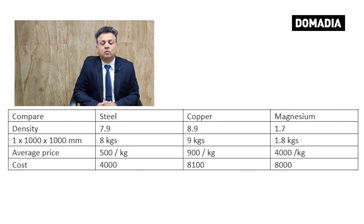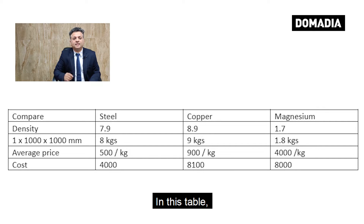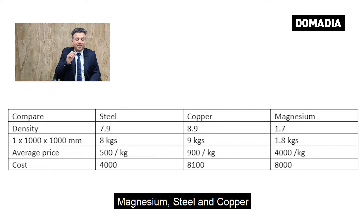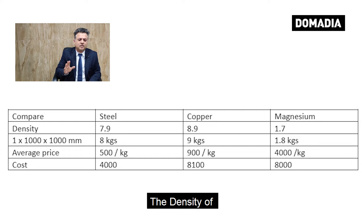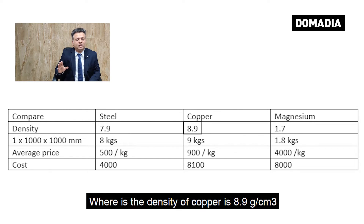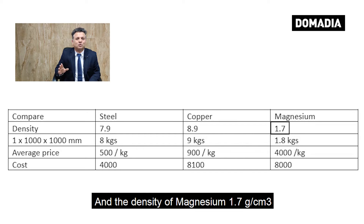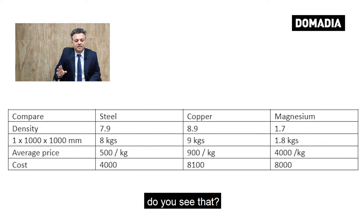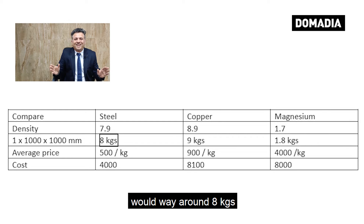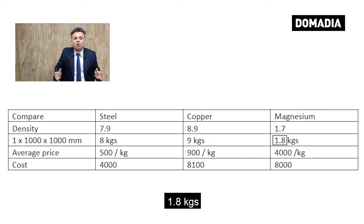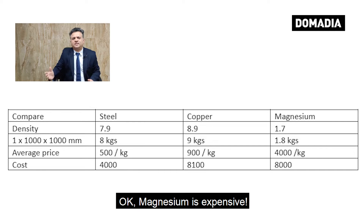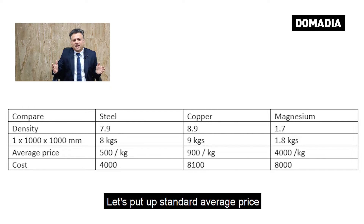Everybody thinks magnesium is a very expensive alloy — okay, maybe. But can we calculate this? In this table we have clearly shown a comparison of magnesium, steel, and copper using industry standards. The density of steel is 7.9, the density of copper is 8.9, and the density of magnesium is 1.7. When you compare a standard sheet of 1 meter by 1 meter, a steel sheet weighs around 8 kg, copper weighs around 9 kg, and magnesium weighs just 1.8 kg.